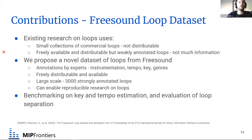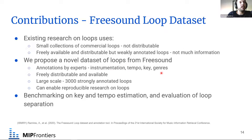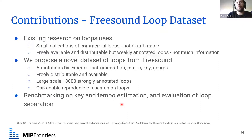Existing research on loops either uses small commercial collections that are not freely distributable, or freely available but weakly annotated loops. We propose a new dataset of loops from Freesound with expert annotations for instruments, tempo, key, and genres. It is freely distributable under a Creative Commons license and is large-scale, containing 3,000 strongly annotated loops. We also benchmark key and tempo estimation and evaluate loop separation algorithms. This was presented at ISMIR in 2020.